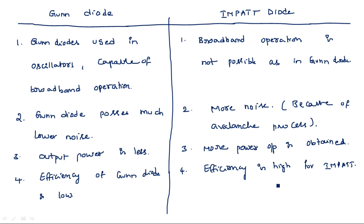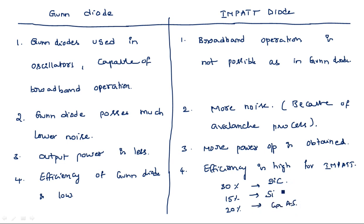For the IMPATT diode, efficiency is high. Efficiency can reach 30% when using silicon carbide compound material, 15% for a single silicon layer, and around 20% for gallium arsenide. Among these three, 30% with silicon carbide is the highest efficiency, which is a compound material.